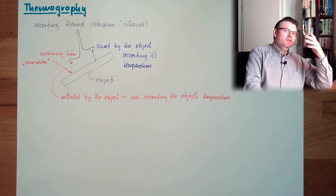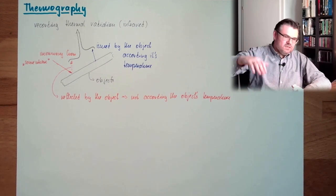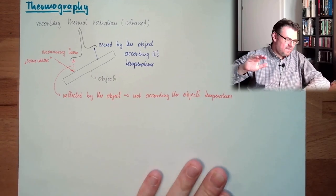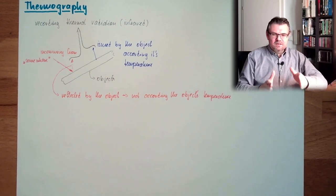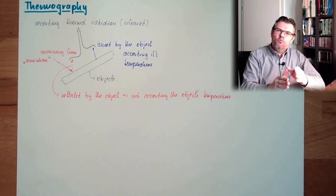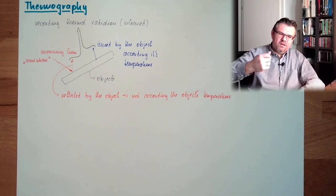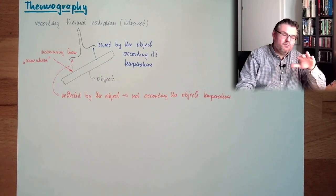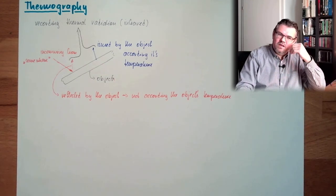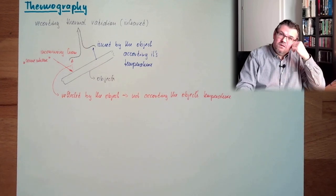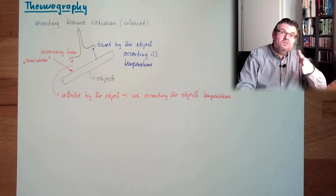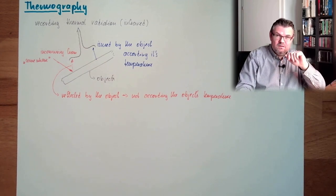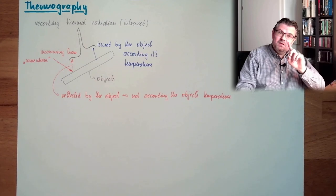Imagine you have a sheet metal lying there. It has the same temperature for sure, but one side is polished and one side is rusty and very matte. One side is shiny and the other is not. If you take a thermal image, you see two different temperatures just because the surface is different.